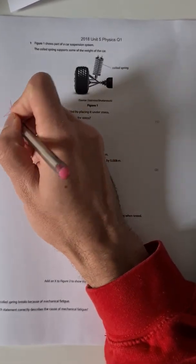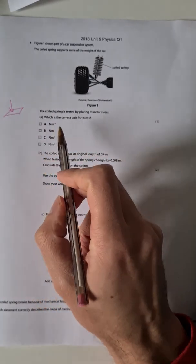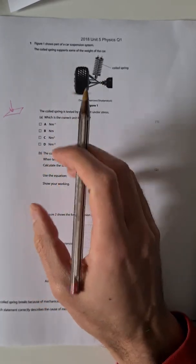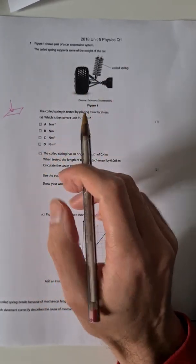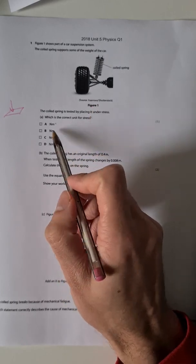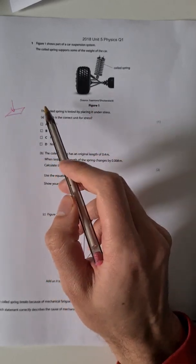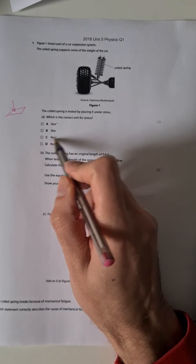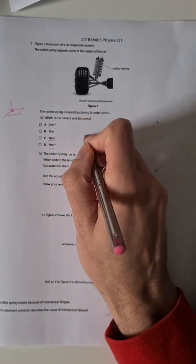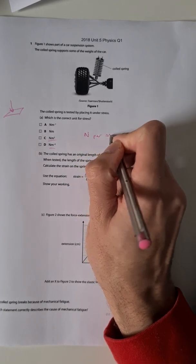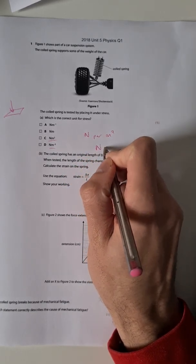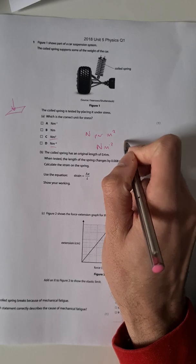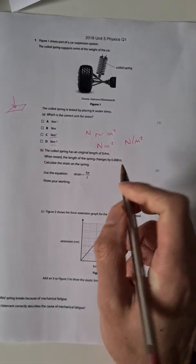Stress is the force downwards on a set area. So the bigger the area the less stress, smaller the area more stress. So it's force divided by area. We'll need meters squared so it's either going to be C or D, and it's newtons per meter squared which can be written as N^-2 or N divided by meters squared. So the correct answer for this one is D.